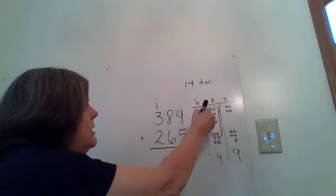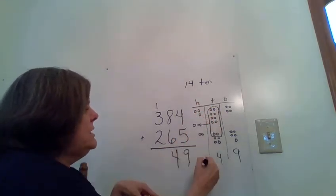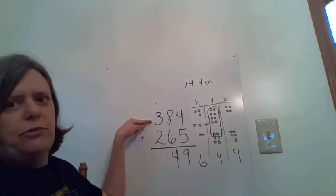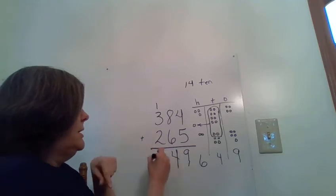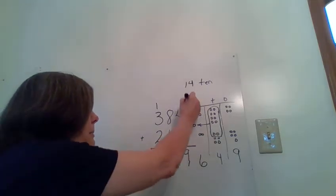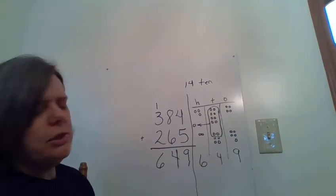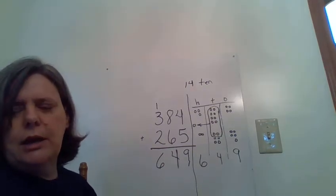So now we can combine our hundreds coins. One, two, three, four, five, six. And sure enough, one plus three is four, plus two more is six. So our answer is 649 for this fluency problem.